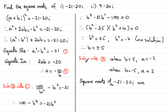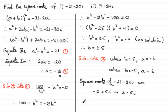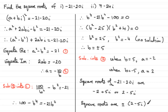The square roots are of the form a plus bi, so they are either minus 2 plus 5i, or 2 minus 5i. We put these two answers together and write the square roots as plus or minus the quantity 2 minus 5i. That's how we go about finding the square roots of a complex number.